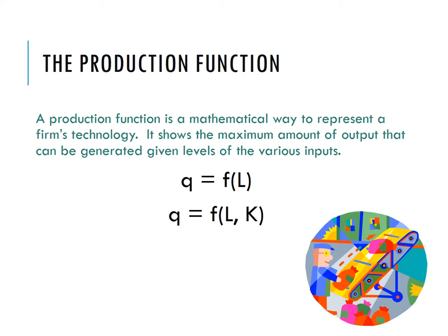Here I have the quantity that the firm produces as a function of L. L is labor, or the number of workers. It could also be a function of labor and capital. Capital is machinery—anything from an oven in a cookie shop all the way up to a production plant.